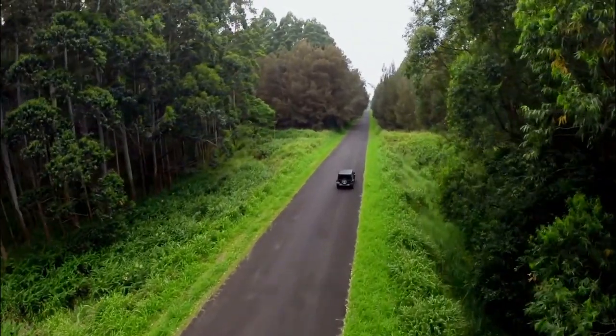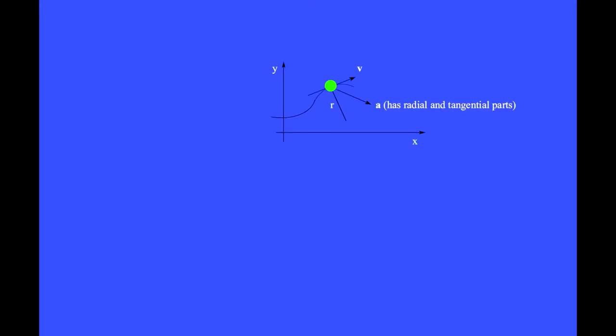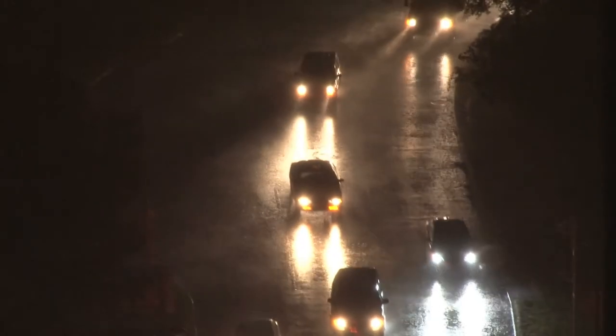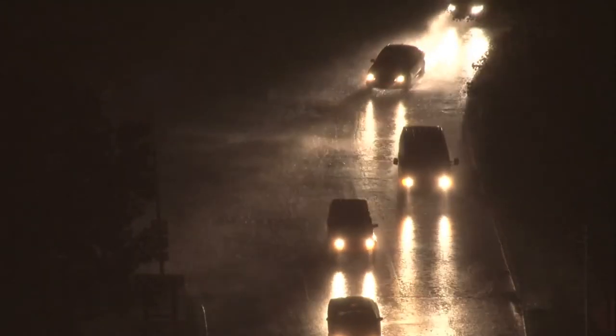When viewed from above, we see this car driving down a windy road. At any moment, the headlights of the car point in the direction of motion and so does the velocity vector. Both are tangential to the path at every moment — the car headlights and velocity vectors point in the direction of travel and are tangential to the path at every moment.